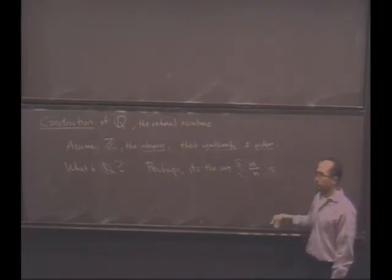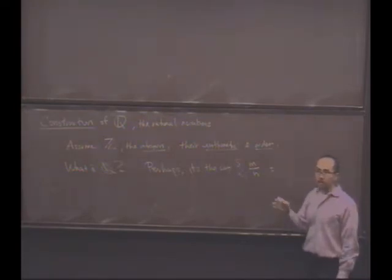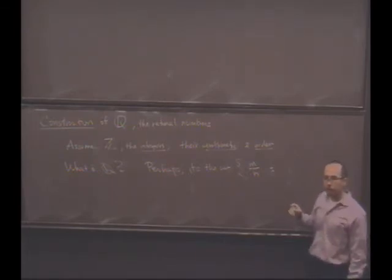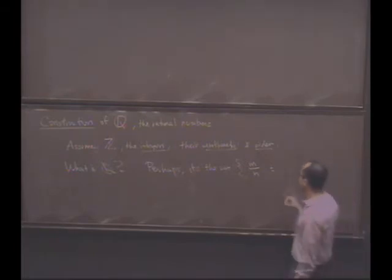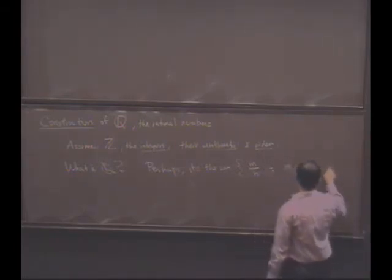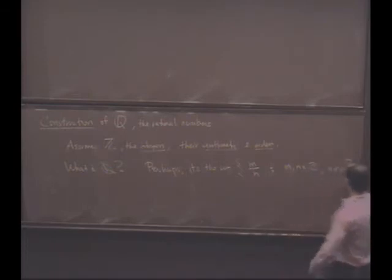Relatively prime. That's not something I'm going to demand right away. But what's a more important consideration? N cannot equal zero. Good. Tell me your name. David. N cannot equal zero, David said. So M and N are in Z, and N is not zero.